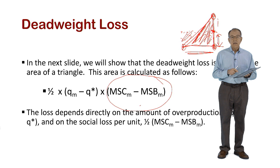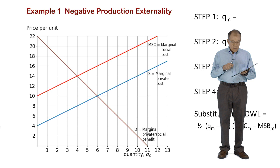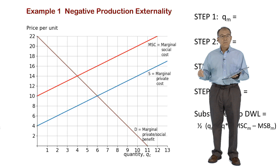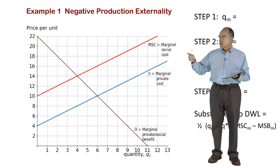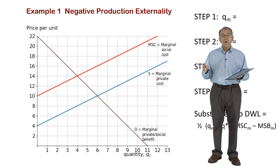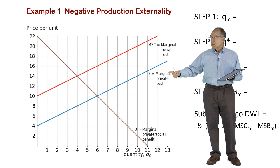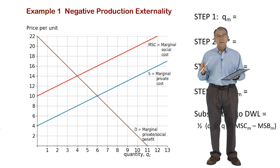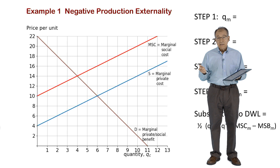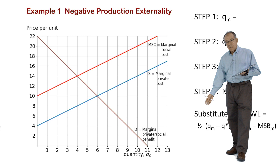Let's look at two examples and calculate deadweight loss. In this diagram, we have a situation of a negative production externality. You should confirm on your own why the market supply curve S is below the marginal social cost curve. I'll give you a series of steps to identify the deadweight loss triangle and calculate the amount of inefficiency.